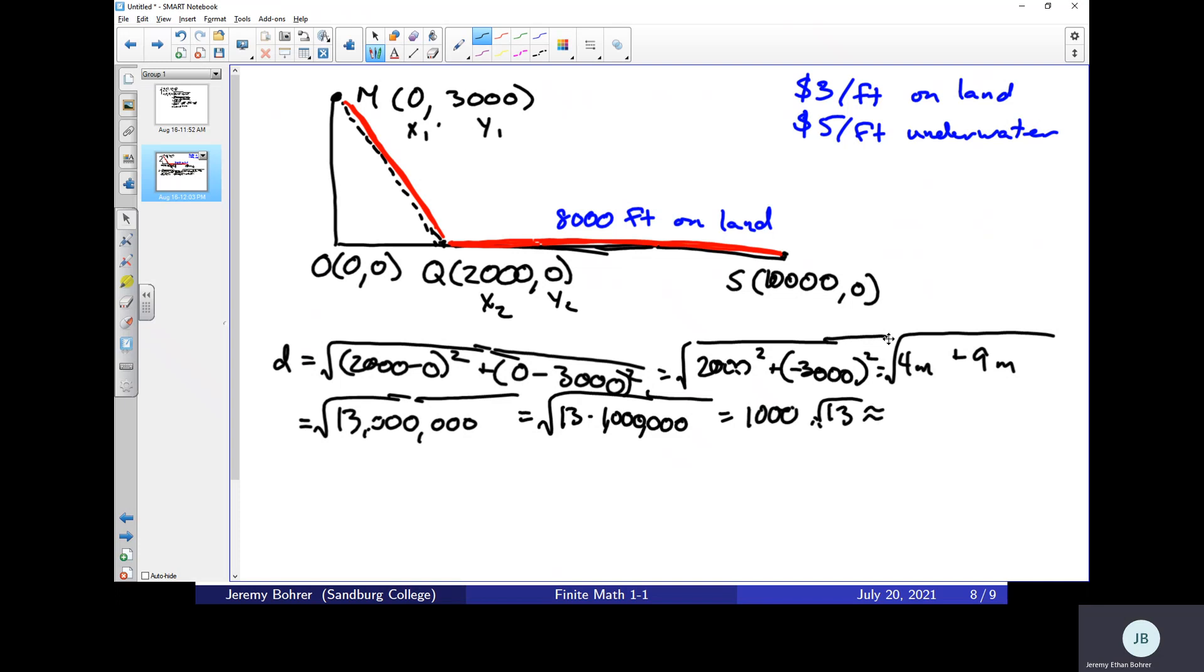So that's going to be approximately, and again I grab my calculator and take the square root of 13 and get 3.6055, and I'm multiplying that by 1,000. We want this to the closest foot, so that's going to be about 3,606 feet.